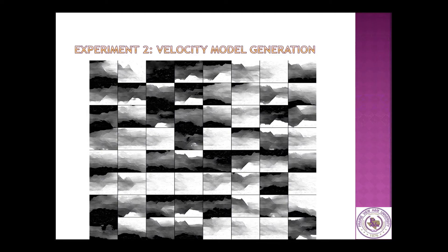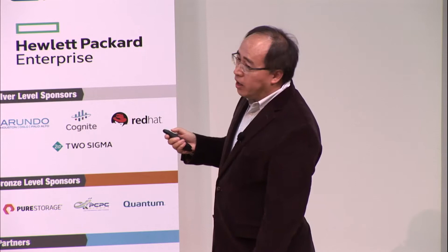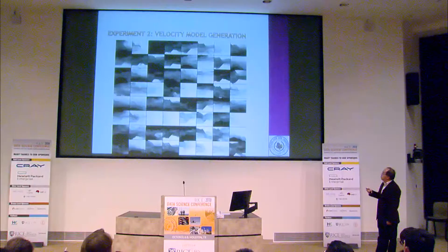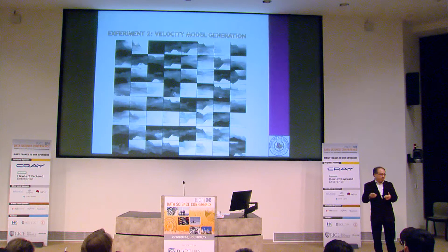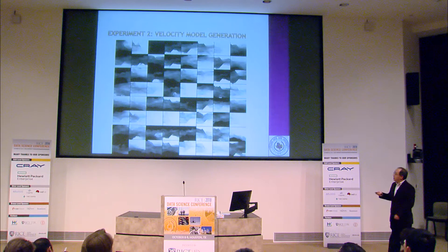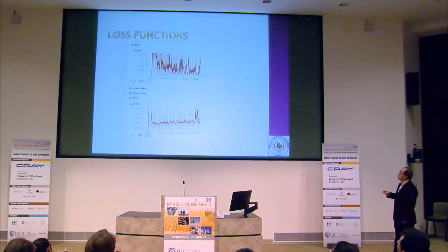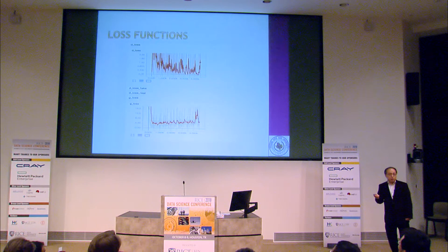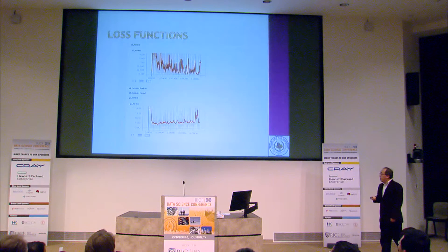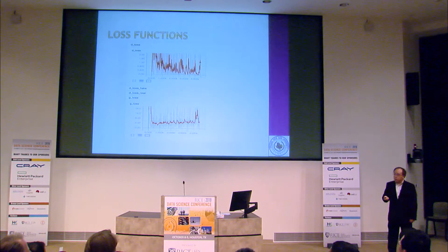We also tested whether GAN can capture fault features. We fed in a lot of fault models and generated new ones. While it's not that realistic, you can actually see some kind of sharp fault features being generated by the GAN itself. There are many things that can be improved. Looking at the loss function, the discriminator loss keeps bumping and the generator doesn't really converge — you can see them competing with each other.